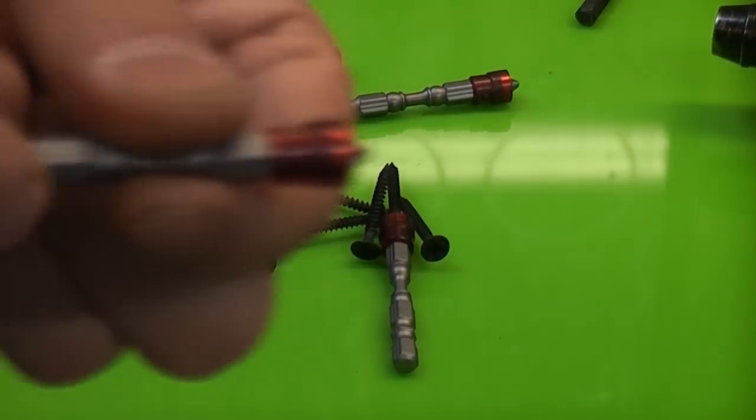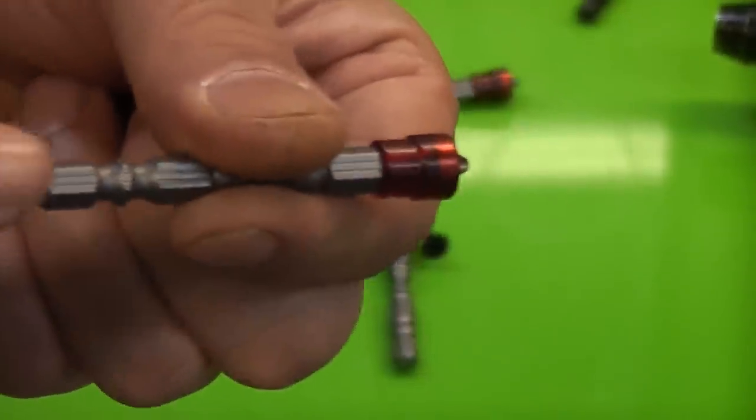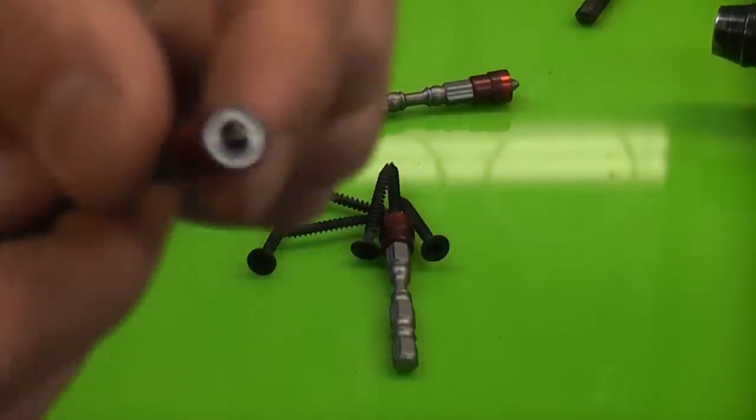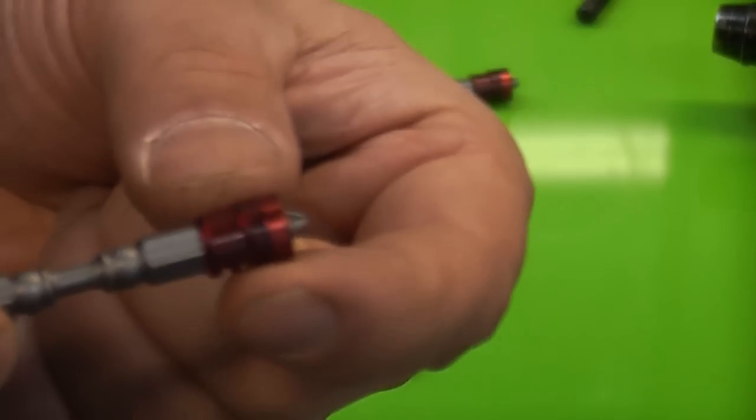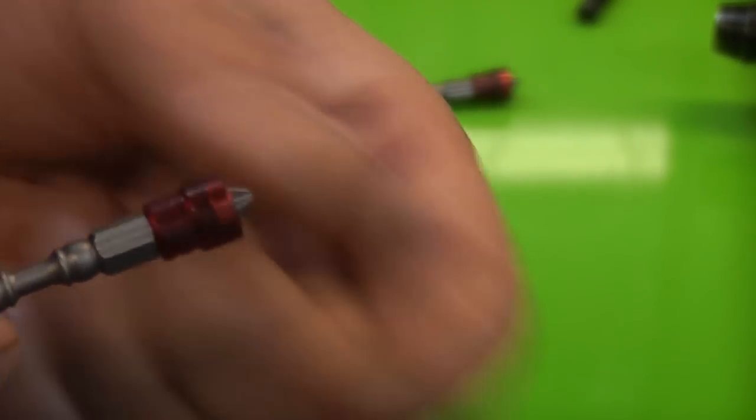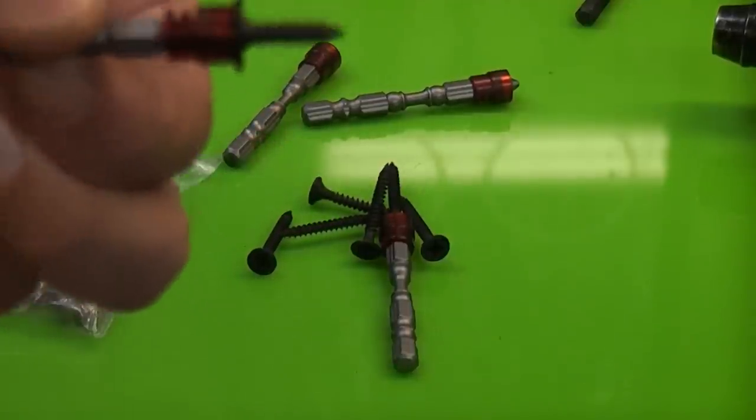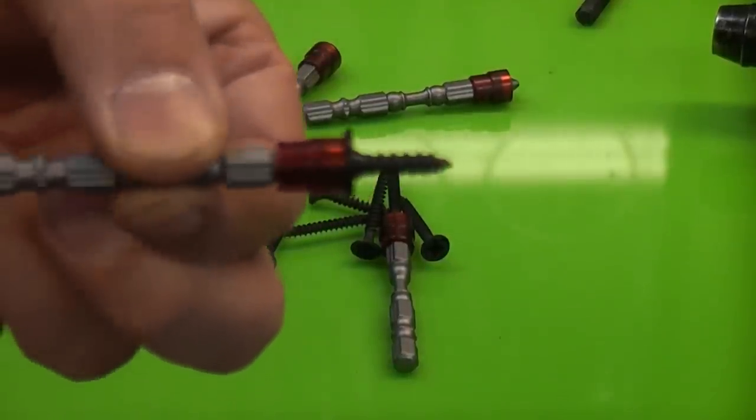I then saw these for sale on banggood.com. These are quarter-inch hex drive, and at the front there's a PH2 bit. The red bit there actually has a magnet, so that will hold the screw in position when you use it, making driving screws an absolute piece of cake.